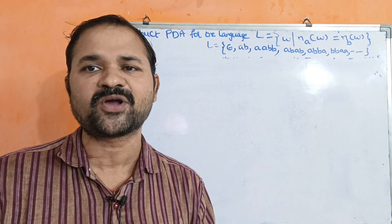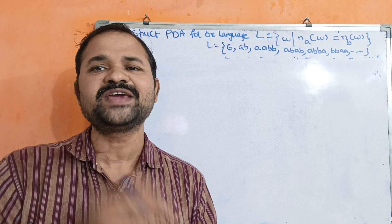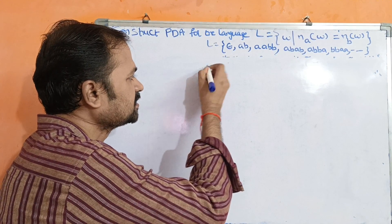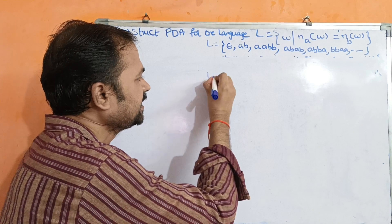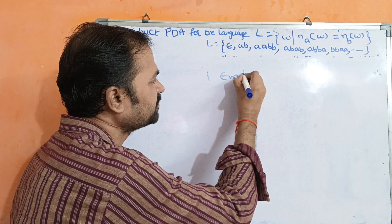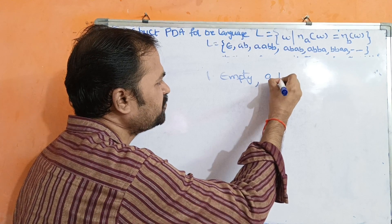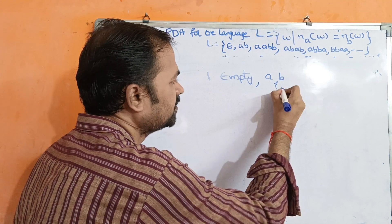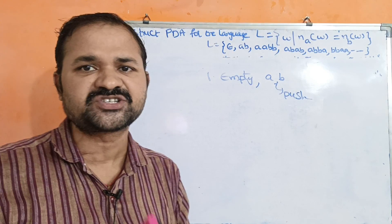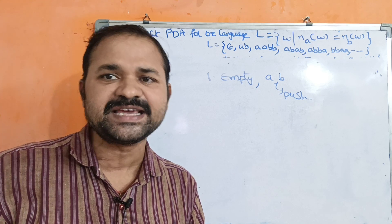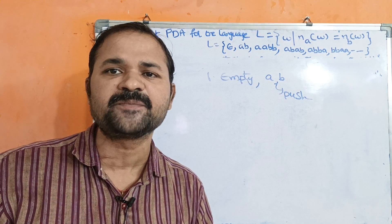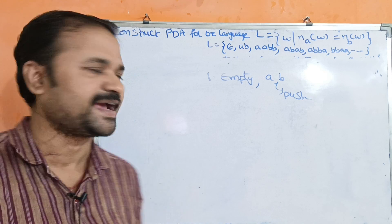For constructing this PDA, we need to follow 3 steps. The first step is: if the stack is empty, and the input symbol is either A or B, then push it onto the stack.